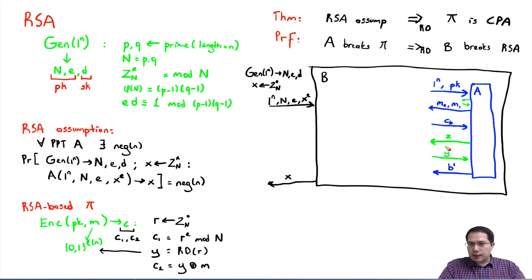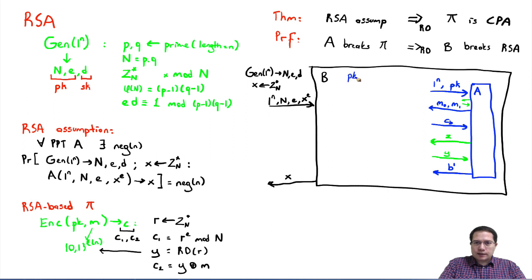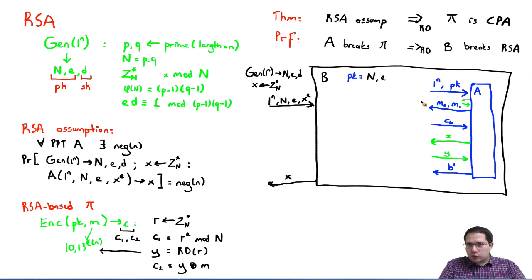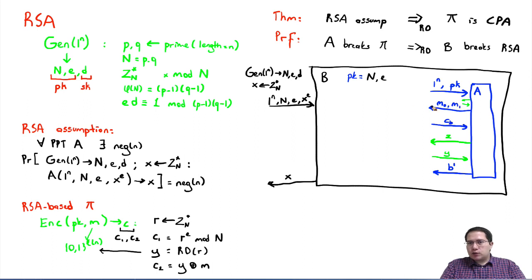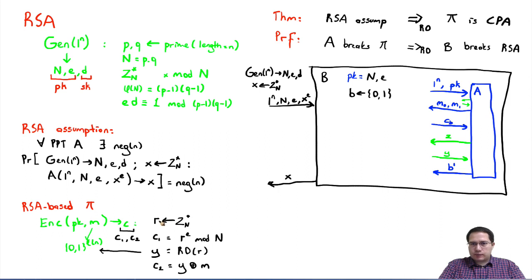Our goal is to write the code for B. B's job initially is easy: it will send the same security parameter to A, and it will set the public key as (n, e) using the values it received from its challenger. B is trying to tie its inputs to the adversary's inputs. The adversary then sends two messages M0 and M1. B picks one of them randomly — let B pick b randomly.